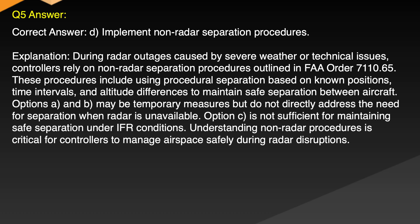Explanation: During radar outages caused by severe weather or technical issues, controllers rely on non-radar separation procedures outlined in FAA Order 7110.65. These procedures include using procedural separation based on known positions, time intervals and altitude differences to maintain safe separation between aircraft. Options A and B may be temporary measures but do not directly address the need for separation when radar is unavailable. Option C is not sufficient for maintaining safe separation under IFR conditions. Understanding non-radar procedures is critical for controllers to manage airspace safely during radar disruptions.